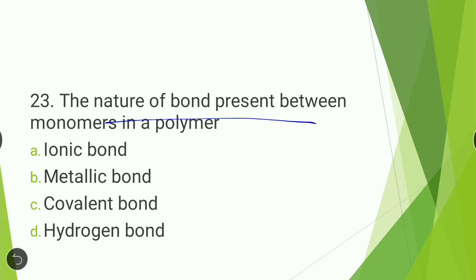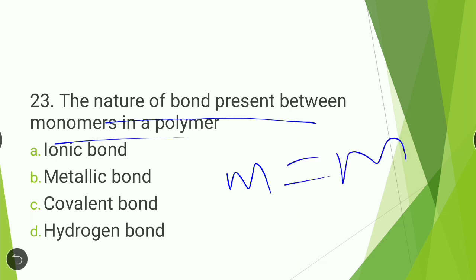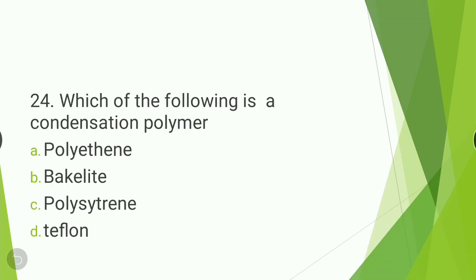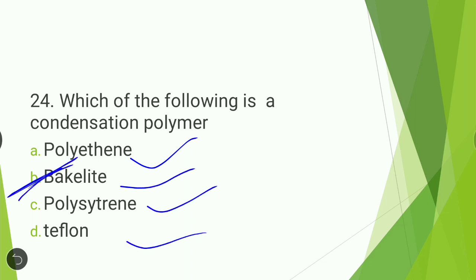Next question: the nature of bond present between monomers in a polymer — ionic bond, metallic bond, covalent bond, or hydrogen bond? The answer is covalent bond. Next question: which of the following is a condensation polymer — polythene, bakelite, polystyrene, or teflon? The answer is bakelite. Bakelite is a condensation polymer formed between phenol and formaldehyde.